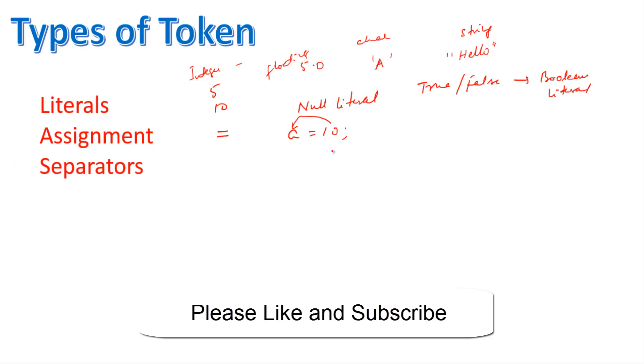Then comes separator. Say if we define int a, b, c, so here what happened? This comma is called the separator. And this semicolon here is the punctuator.